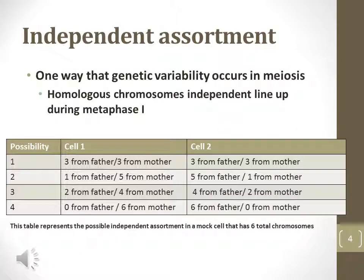The law of independent assortment explains how genes can arrange in particular assortments following crossing over. Any combination of genes from parental chromosomes may be observed, as demonstrated in this table.